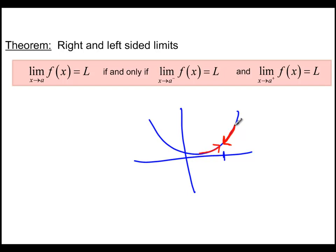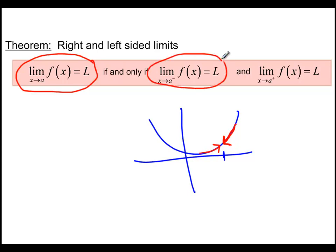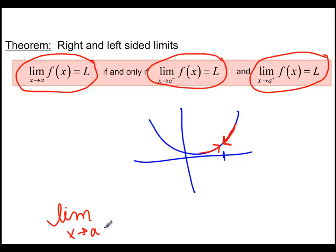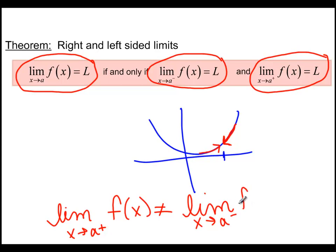Our theorem says that the limit as x goes to a equals the number L if and only if the limit from the left equals L and the limit from the right equals L. And what this means is if the limit as x approaches a from the right does not equal the limit as x approaches a from the left, then the general limit does not exist.